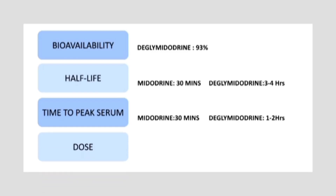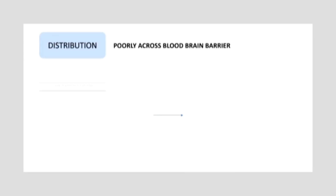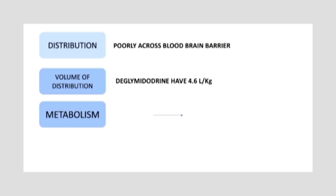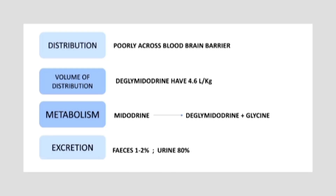Talking about dosing: the safe window for administering the drug, as a result of several experimental trials, is 30 mg per day. Exceeding the dose can result in toxicity and adverse effects. Regarding distribution, midodrine does not cross the blood-brain barrier, which is why it does not majorly affect the brain — this depends on the drug's lipophilicity. The volume of distribution of desglymidodrine is 4.6 L/kg. Midodrine is majorly metabolized in the liver into desglymidodrine by removal of glycine via enzymatic hydrolysis. It is primarily excreted via urine, where 80% of the dose is eliminated through renal excretion, and a small fraction of 1 to 2% is excreted via feces.